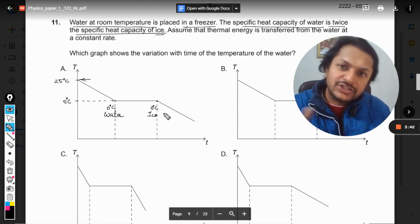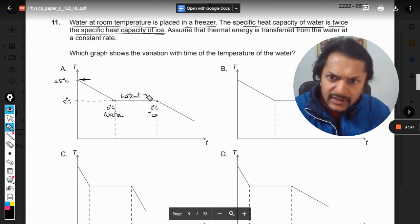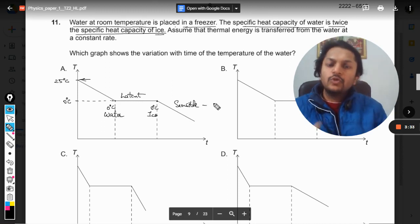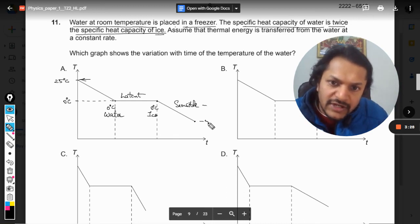Now we're talking about sensible heating or sensible cooling. This is called sensible heating, this is latent heating. Sensible heating or sensible cooling is when the temperatures are actually changing. So now this temperature moves down.